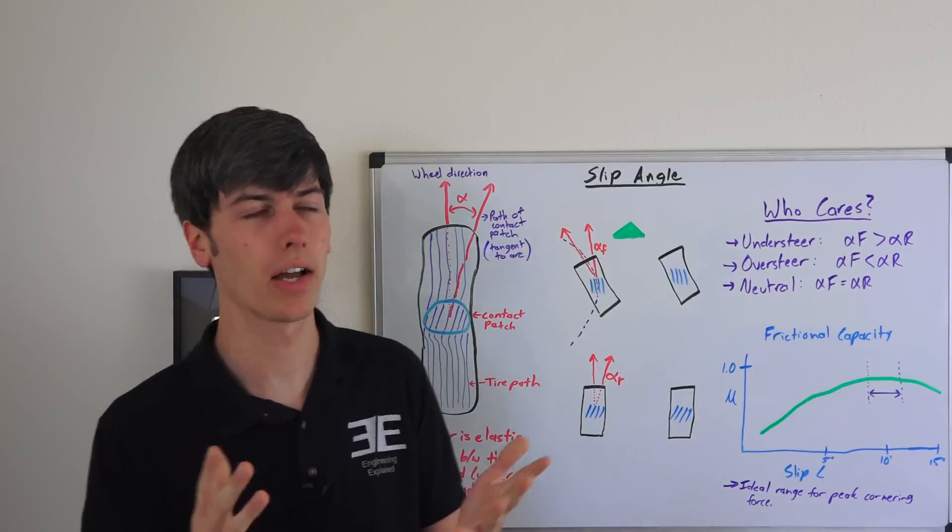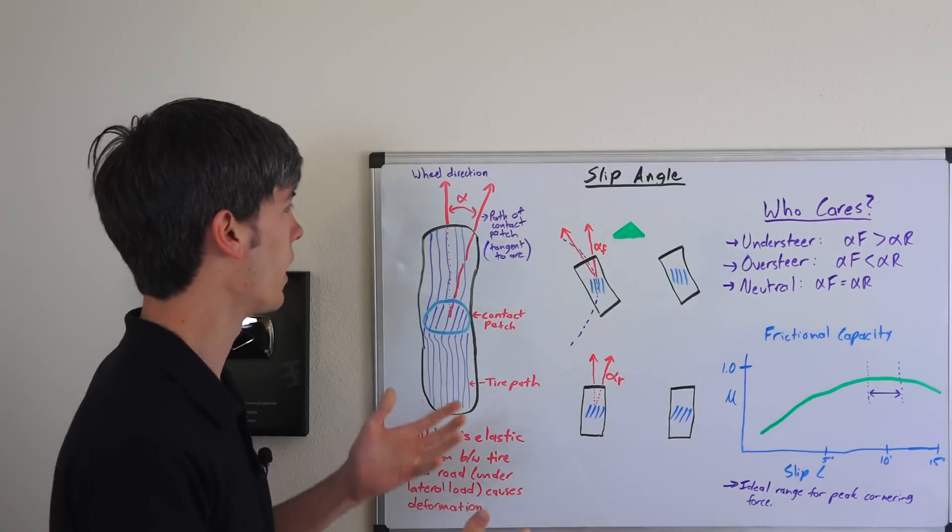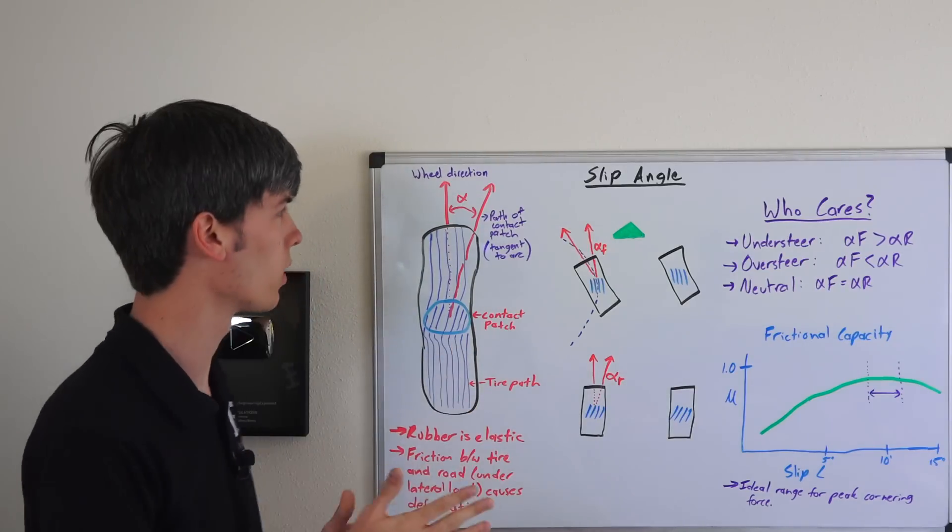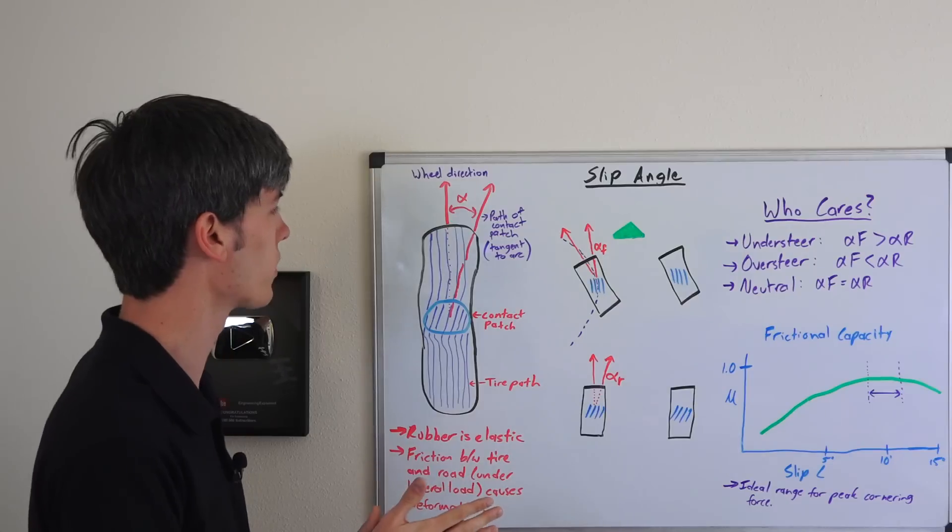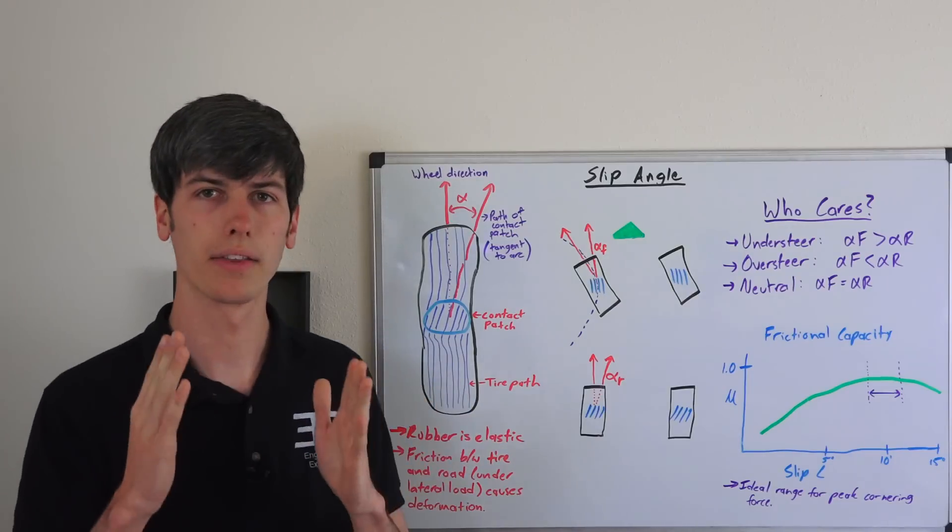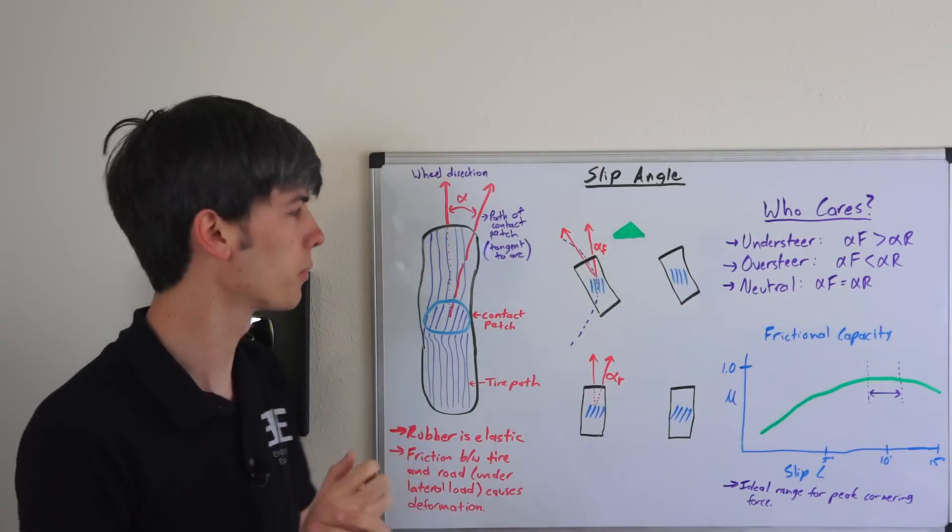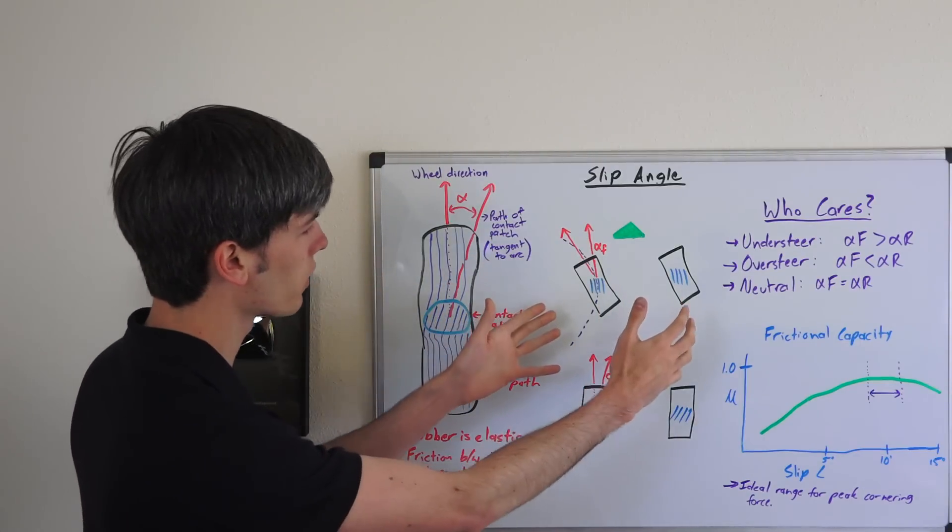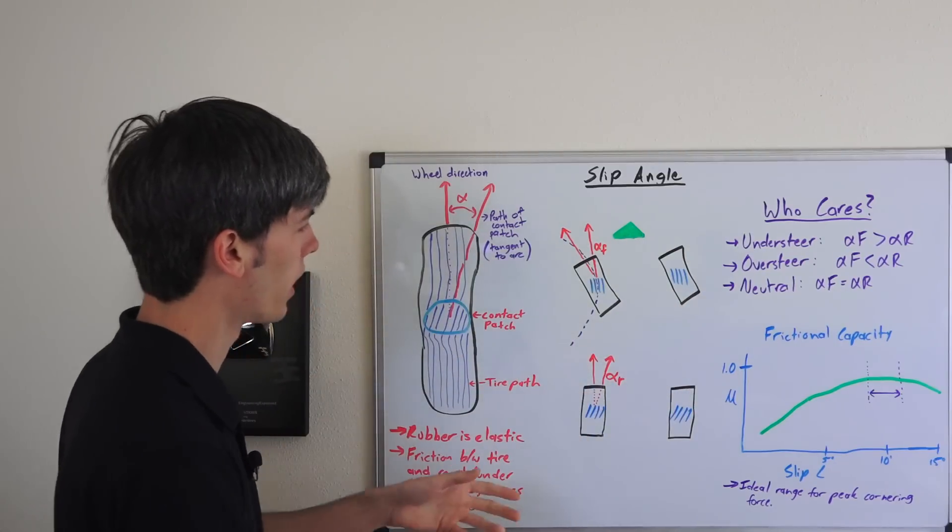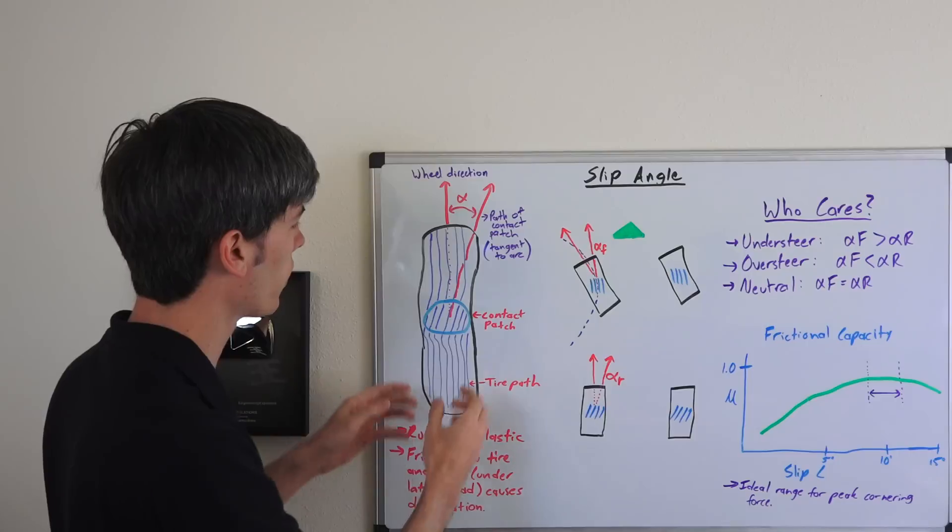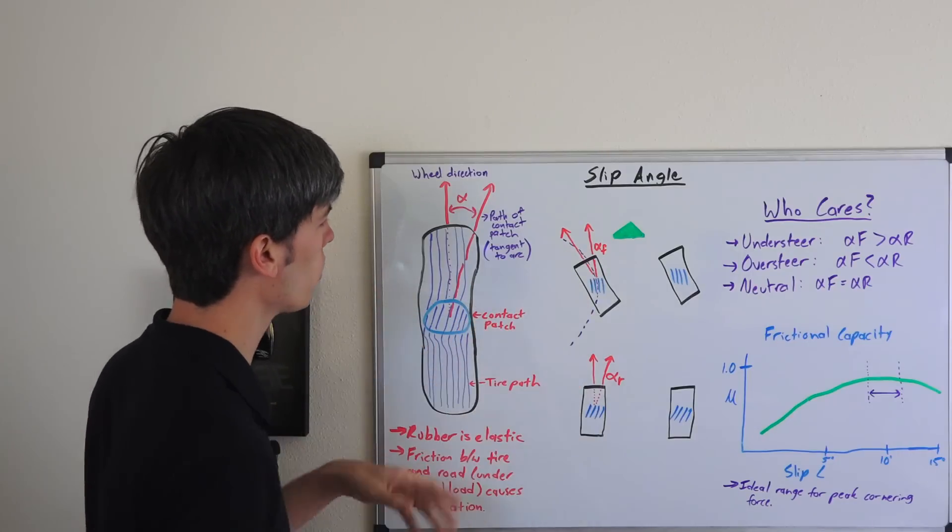So let's talk about exactly what slip angles are. Very simply put, a slip angle of a wheel and tire is basically the difference between the direction the tire is rolling and the direction the wheel is pointed. Here we have a car with four wheels going around a left-hand turn, and this is a zoomed-in view of one of these tires.